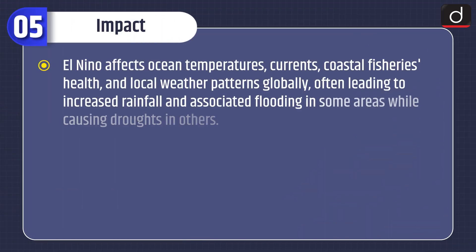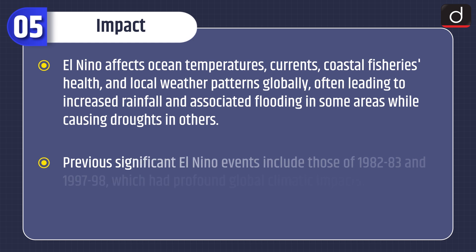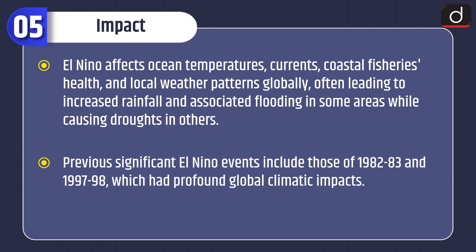Now lastly, moving on to impacts. El Niño affects ocean temperatures, currents, coastal fisheries health, and local weather patterns globally, often leading to increased rainfall and associated flooding in some areas, while causing droughts in others. Previous significant El Niño events include those of 1982–83 and 1997–98, which had profound global climatic impacts.